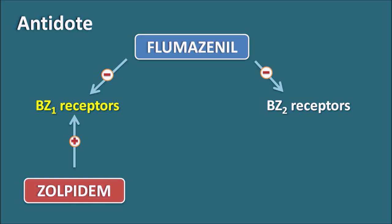In summary, Zolpidem is a Z-hypnotic: chemically it is not related to the benzodiazepines, but pharmacologically it acts similarly. The key difference is that Zolpidem selectively acts on benzodiazepine-1 receptors, whereas benzodiazepines are non-selective and act on both benzodiazepine-1 and benzodiazepine-2 receptors. Because of this selectivity, Zolpidem mainly produces hypnotic effects with little muscle relaxation or anticonvulsant activity, making it suitable for short-term treatment of insomnia, including cases where less than 4 hours of sleep remain.